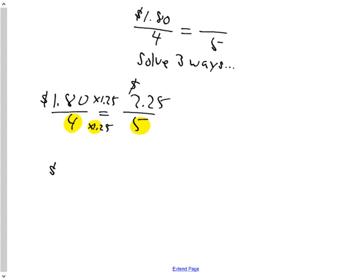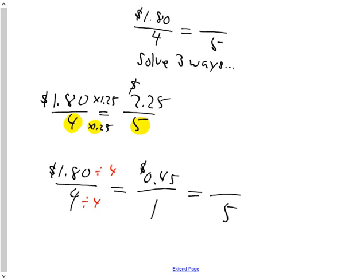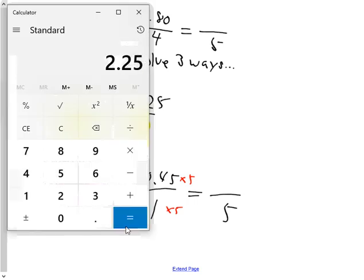The second method you could have done is called the unit rate method. If it's $1.80 for 4, we're going to check to see how much it is for 1. We're going to do so by doing both terms here, dividing by 4. Therefore, the cost of 1 will be 45 cents. And $1.80 divided by 2 is 90 cents. 90 cents divided by 2 again is 45 cents. And then you get it back up to 5. You multiply both terms by 5. And 45 cents times 5 is $2.25.